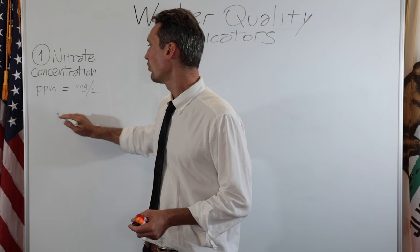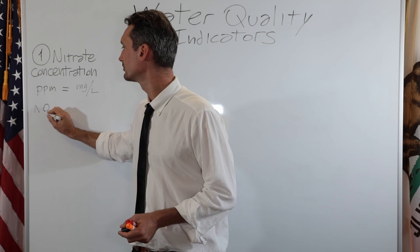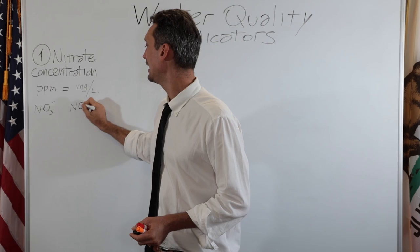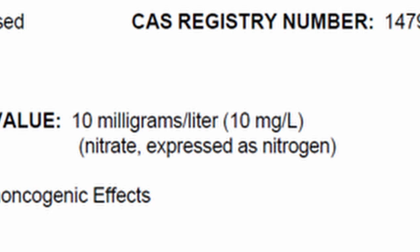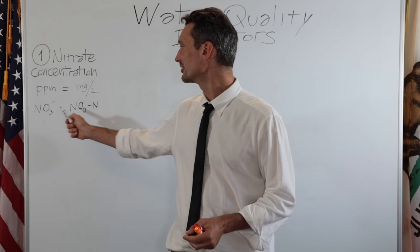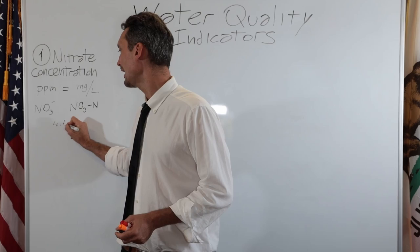It gets more complicated when you will see written parts per million of NO3, that means of nitrate, or parts per million of NO3-N. And sometimes they call this nitrate as nitrogen, or nitrate nitrogen, or nitrate expressed as nitrogen. And these are two different units, and there is a conversion factor between the two that is 4.43.